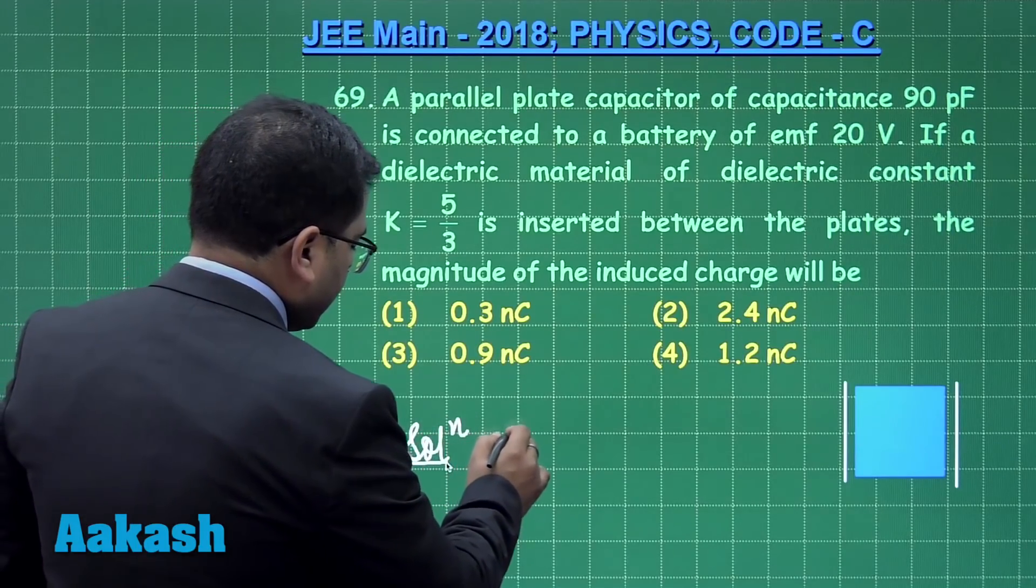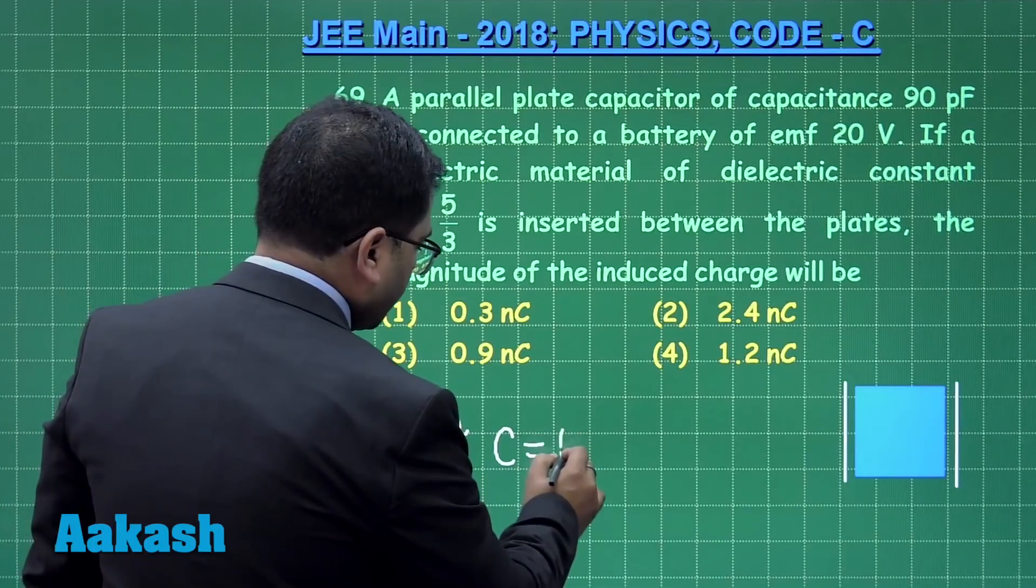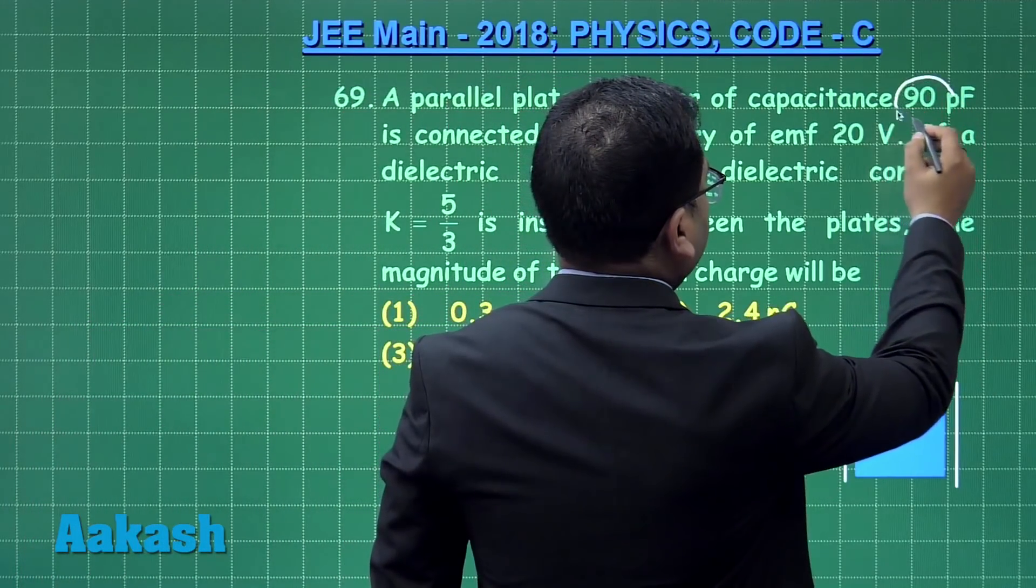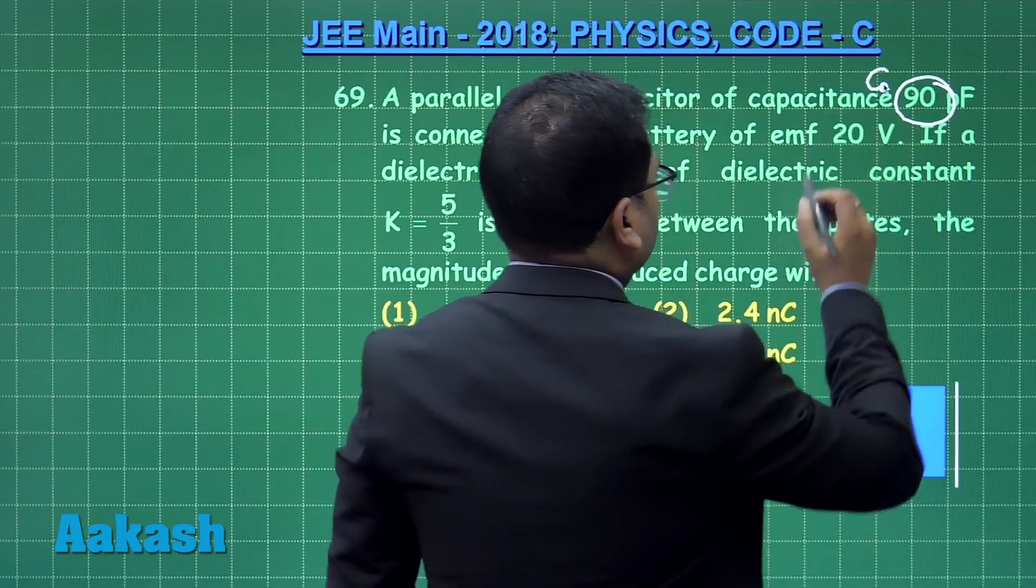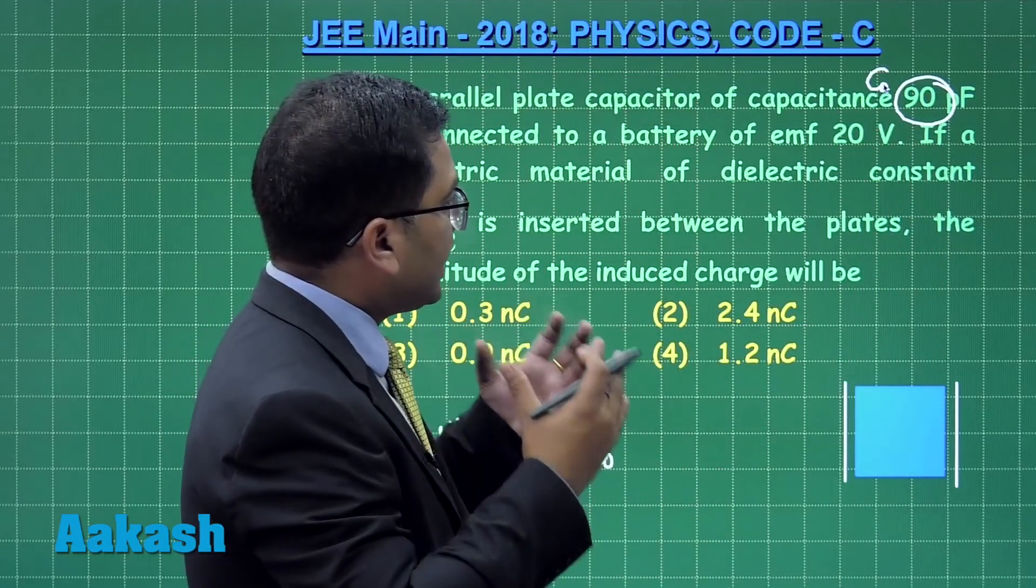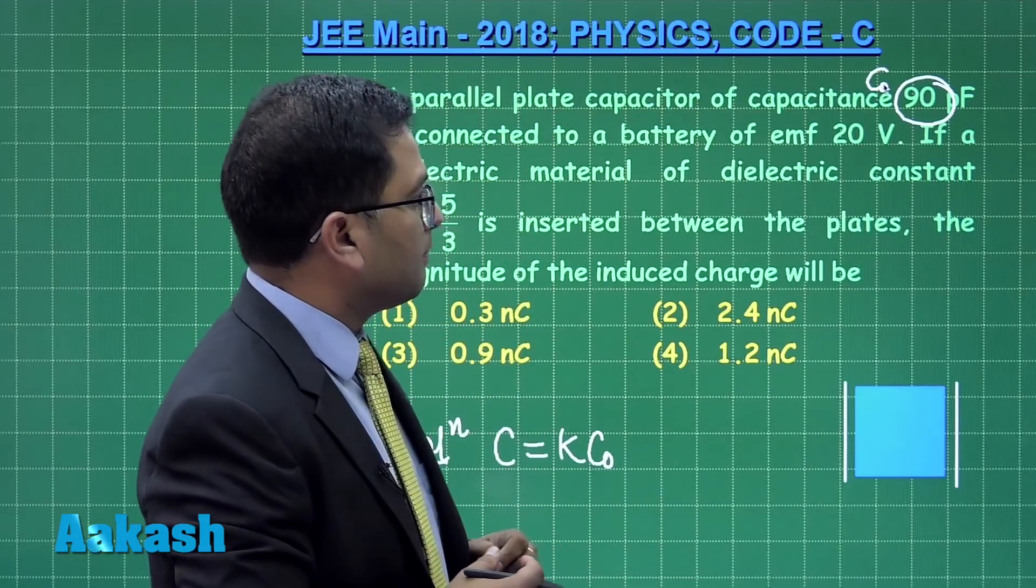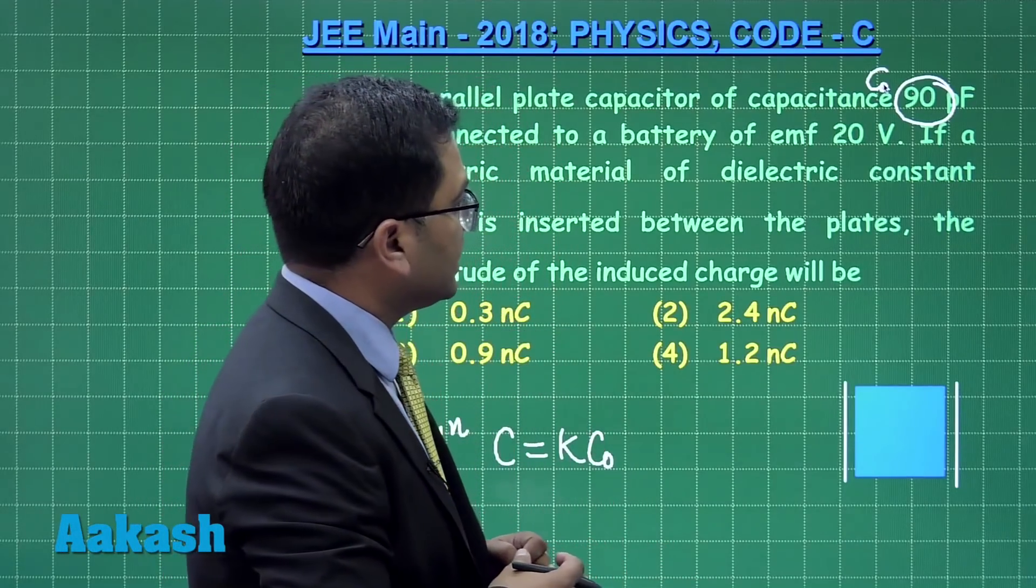The new value of capacitance is going to be K times C₀, where this will be taken as C₀, that's the capacitance with air as the medium. This has been connected to a battery of 20 volt EMF.